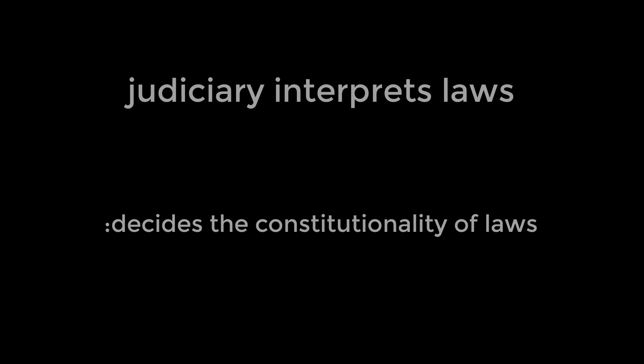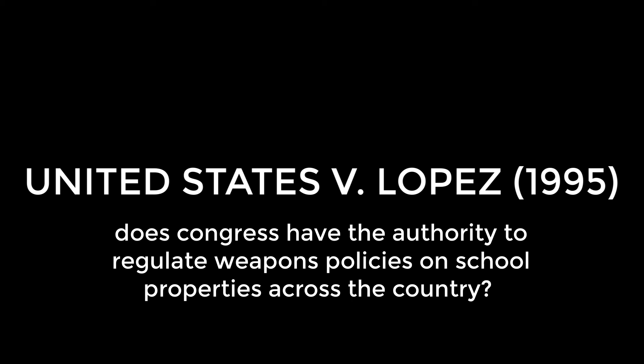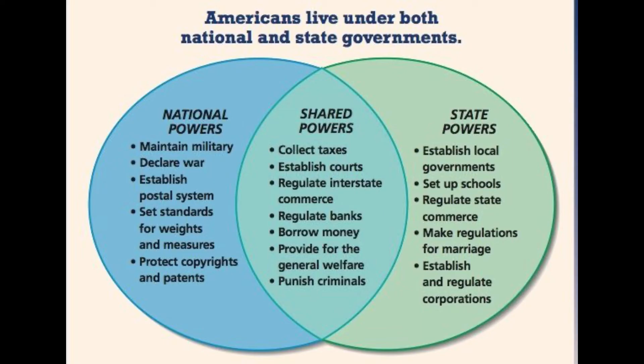A really good example of this from earlier in the semester was from the Supreme Court case United States versus Lopez. Congress had passed a law in 1990 that banned the carrying of firearms near public schools, and while this would seem like a law that everyone would be happy with, we really have an issue of federalism here. Does Congress have the constitutional authority to regulate weapons policies on school property? According to the Supreme Court justices in 1995, no, Congress does not have this authority.